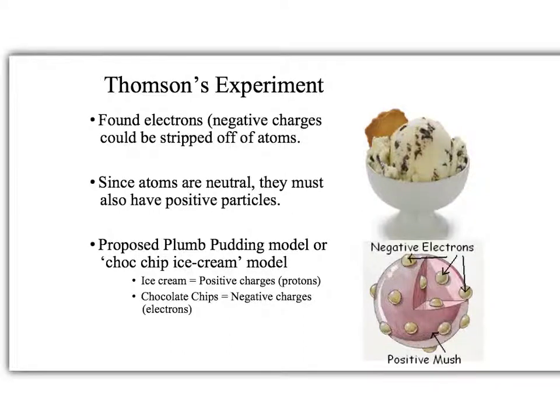J.J. Thompson came along and figured out some things that Dalton didn't. If you recall, Dalton thought atoms were spherical in nature, and he thought that there was really nothing in them and they couldn't be divided. Thompson came along and he blew some holes in that theory.